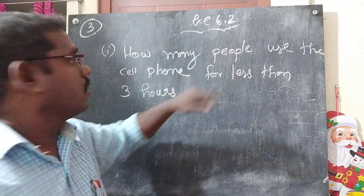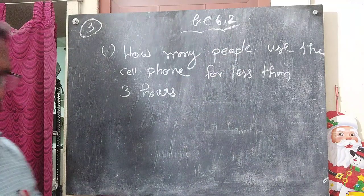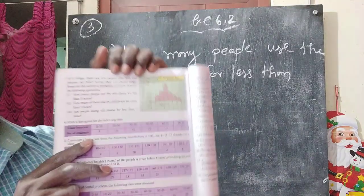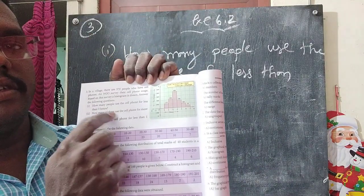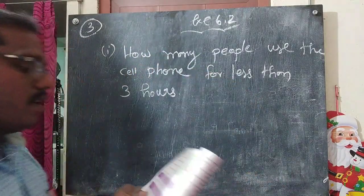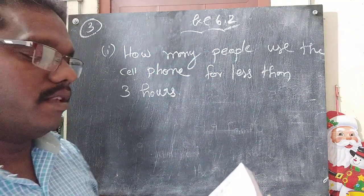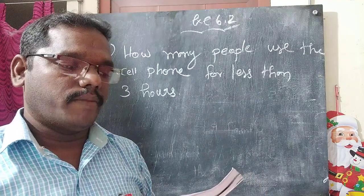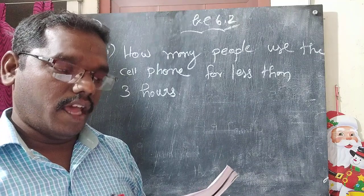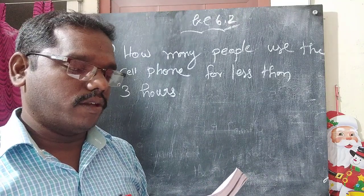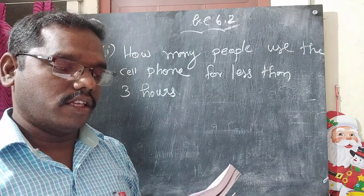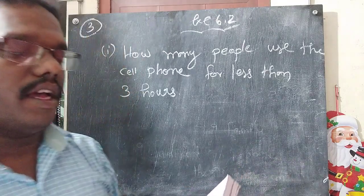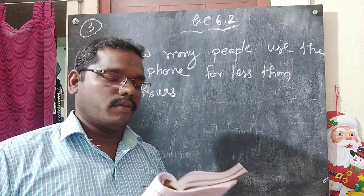Exercise 6.2, third problem. We are going to do this now. What is the problem? In a village, there are 570 people who have cell phones and an NGO surveyed their cell phone usage. Based on this survey, a histogram is drawn. Answer the following questions. So in a village, 570 people are having the cell phone.